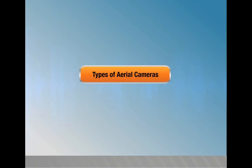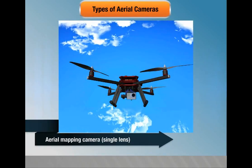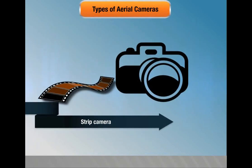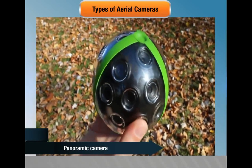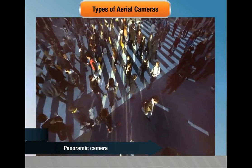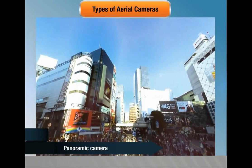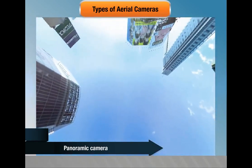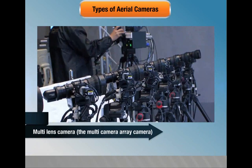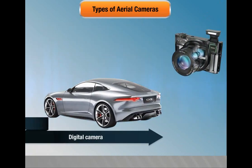Types of aerial cameras are: aerial mapping camera single lens, reconnaissance camera, strip camera, panoramic camera, multi-lens camera, multi-array camera, and digital camera.